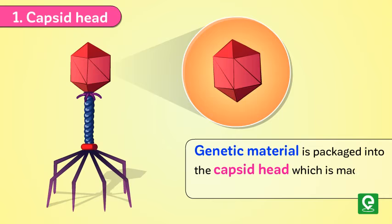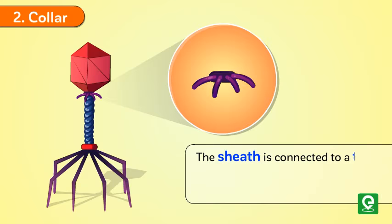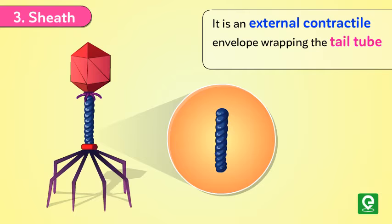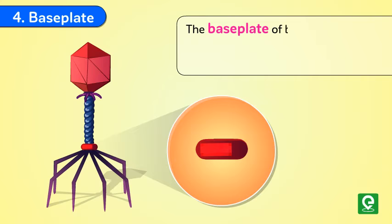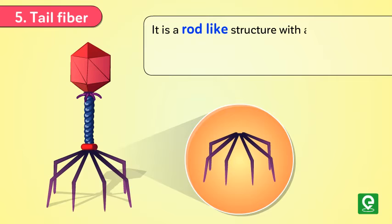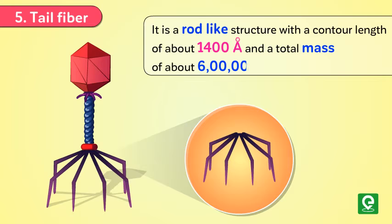There are various parts of a bacteriophage. Number one: capsid head — genetic material is packed into the capsid head, which is made up of protein. Number two: collar — the sheath is connected to a thin disc or collar at the head end and to a base plate at the tip end. Number three: sheath — an external contractile envelope wrapping the tail tube. Number four: base plate — a multi-protein molecular machine that controls host cell recognition. Number five: tail fiber — a rod-like structure with a contour length of about 1400 angstroms and a total mass of about 600,000 daltons.